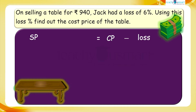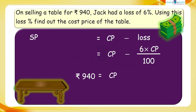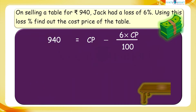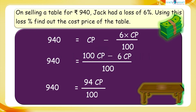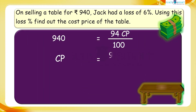So: 940 = CP minus (6 × CP divided by 100). That gives us 940 = (100 CP divided by 100) minus (6 CP divided by 100), which simplifies to 940 = (100 CP − 6 CP) divided by 100, or 940 = 94 CP divided by 100.